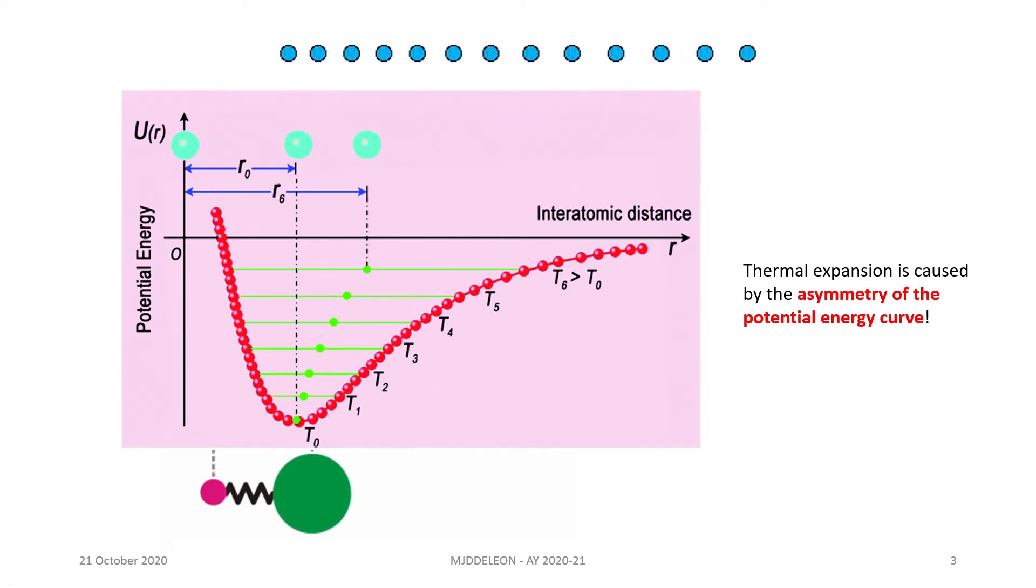Thus, thermal expansion is caused by the shape of our potential energy curve, by the asymmetry of our potential energy curve. This asymmetry arises due to the fact that it is easier to pull apart our atoms than to squish them together.